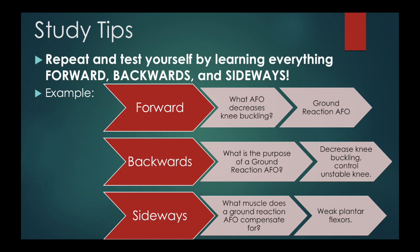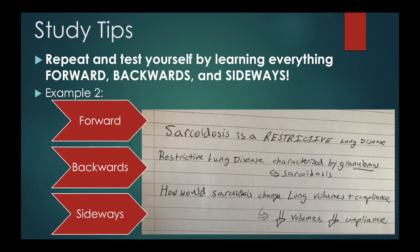I made another example for people who study by writing in a notebook. Use this technique for every piece of information you learn. Don't just write down 'sarcoidosis is a restrictive lung disease' because you might forget it. You learned it forward: sarcoidosis is a restrictive lung disease. Now take it back — can you name the restrictive lung diseases? Or ask yourself a test-type question: what restrictive lung disease is associated with granulomas? That would be sarcoidosis. Then take it a step further, learning it sideways.